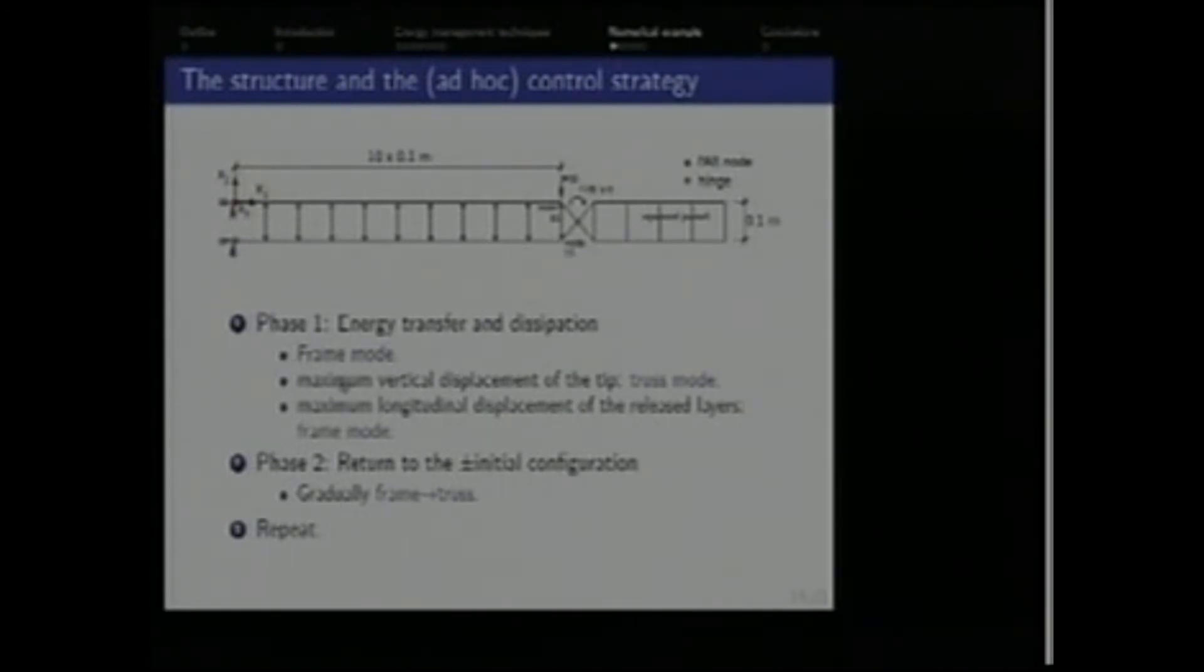Our ad hoc or intuitively derived control strategy consists of two phases. The first phase is energy transfer and dissipation. We start in the frame mode. So the structure vibrates mostly in its first vibration mode. Upon detection of the maximum vertical displacement, we release the strain energy, which is accumulated in both layers, into horizontal energy of vibrations, which are of much higher frequency, just by going for a short period of time to the truss mode. So we go up, for example, we then release the energy to horizontal vibrations and block the structure again in the frame mode. Then the second phase comes on is the return to more or less initial configuration. The remaining energy that has still remained in the basic mode forces the structure to go down according to the first vibration mode. And then we gradually release the nodes to the truss mode to allow the return of the whole structure to more or less initial configuration.